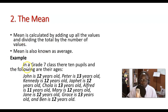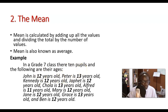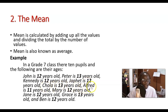Let us look at this example. In a Grade 7 class there are ten pupils and the following are their ages: John is 12, Peter is 13, Kennedy is 12, Jaffet is 12, Chola is 13, Alfred is 11, Mary is 12, Jen is 12, Grace is 13, and Ben is 12 years old. As you can see, this is a long list.